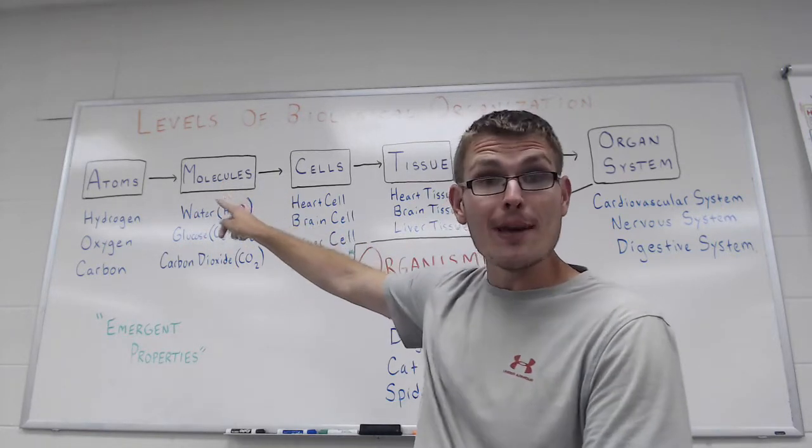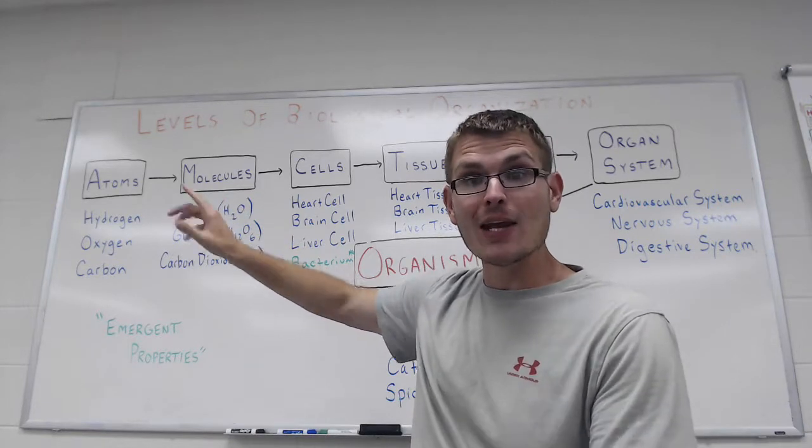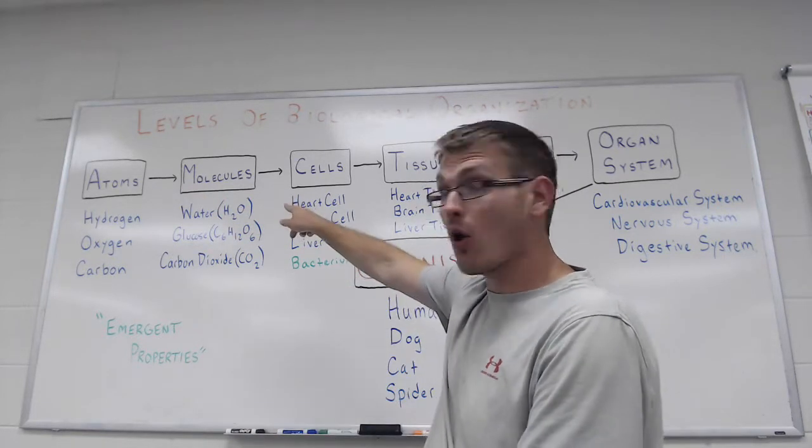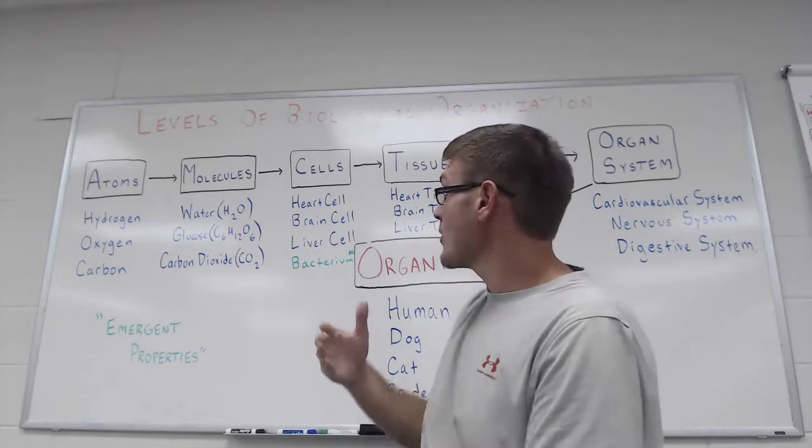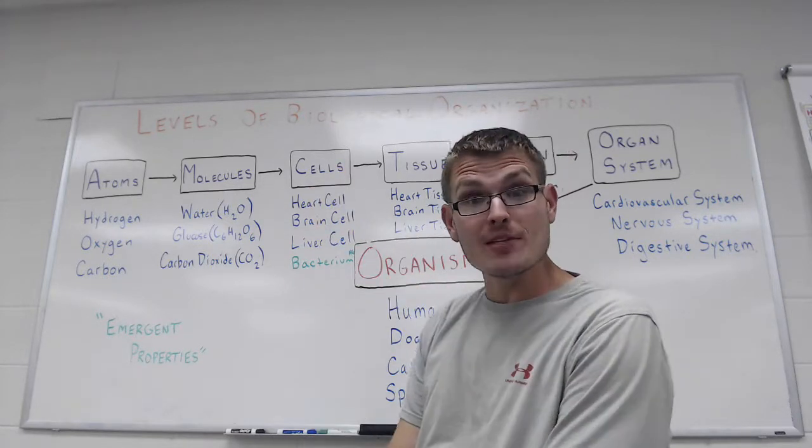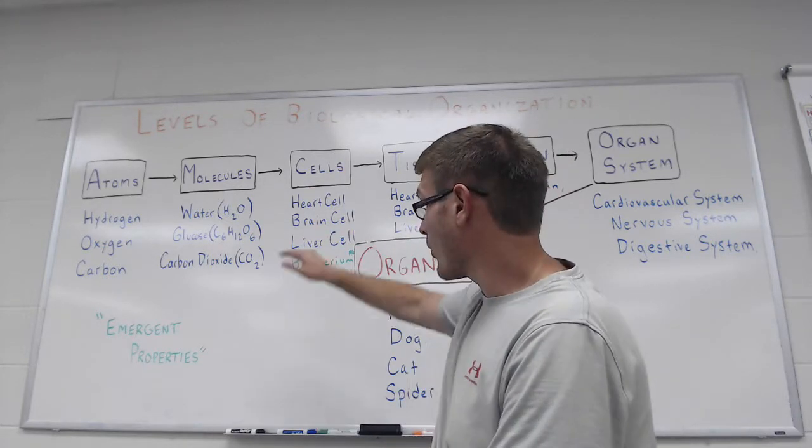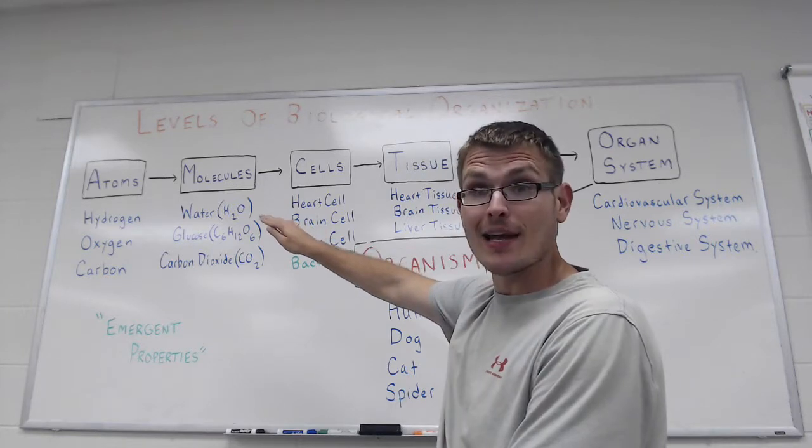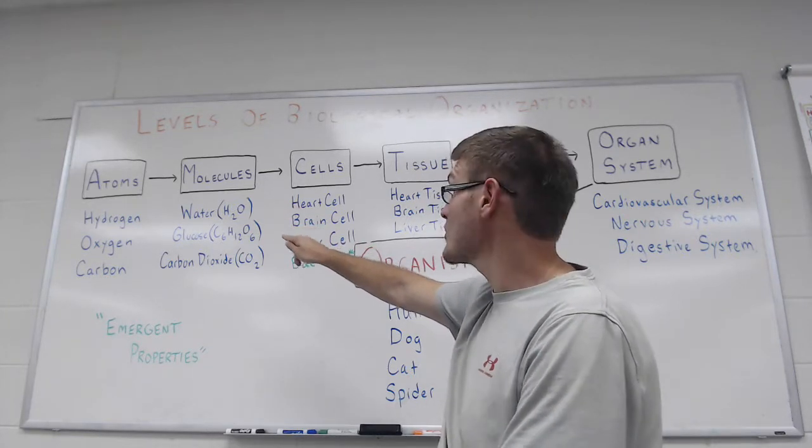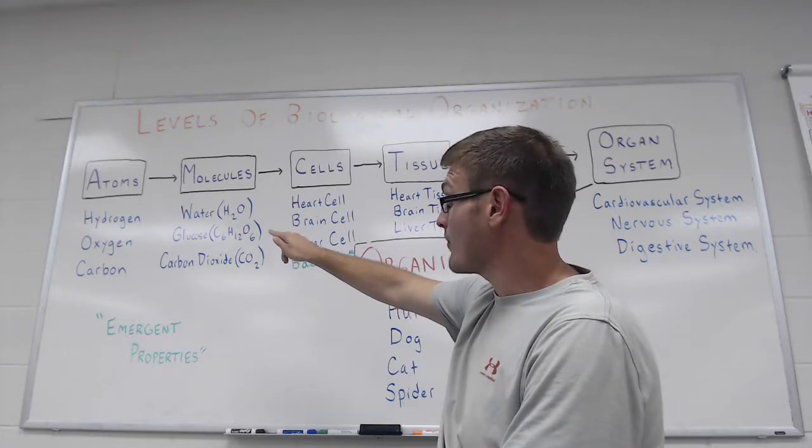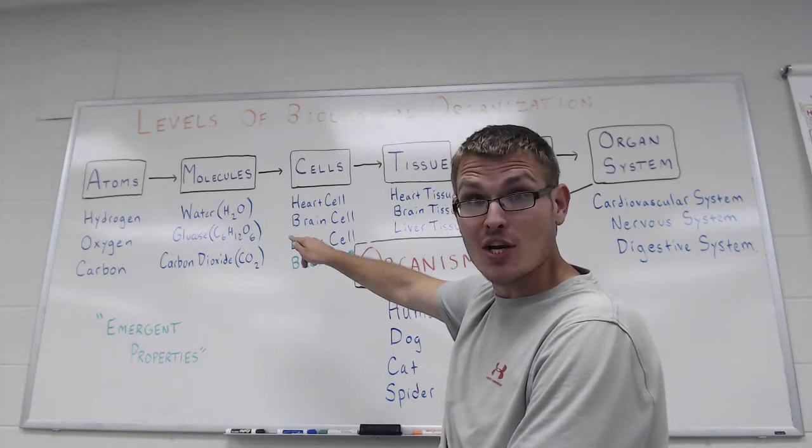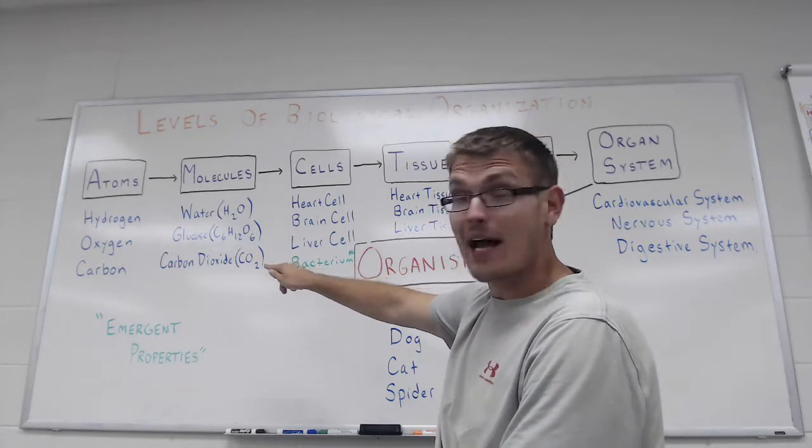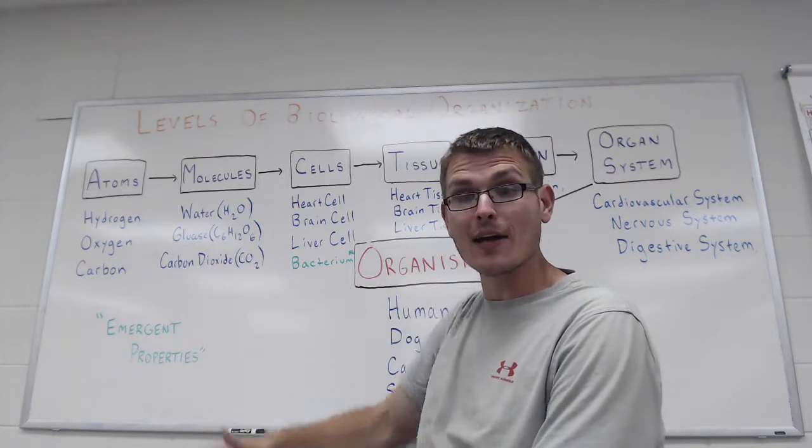So when you get multiple atoms working together in one unit, you get what is called a molecule. So some examples of molecules, some of which you're probably familiar with, are water, which you can see is made up of hydrogen and oxygen atoms, glucose, which is made up of carbon, hydrogen and oxygen atoms, carbon dioxide, which again is made up of carbon and oxygen atoms.